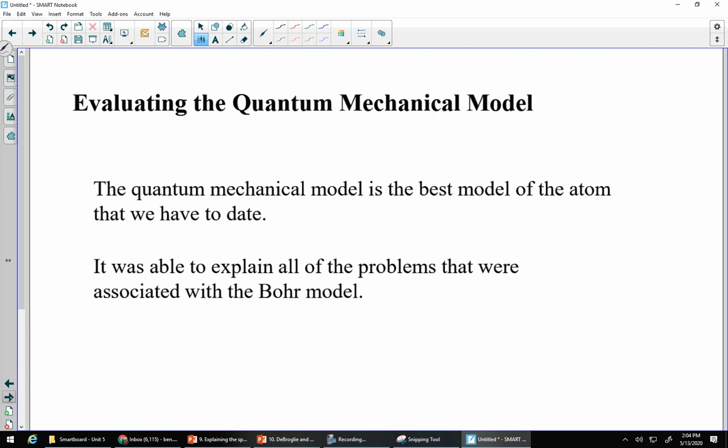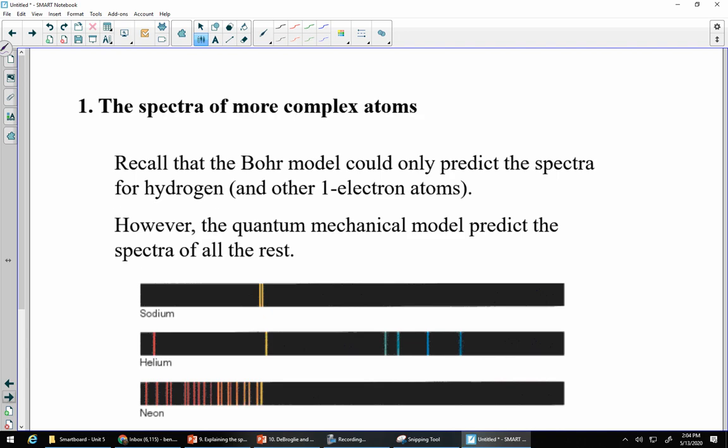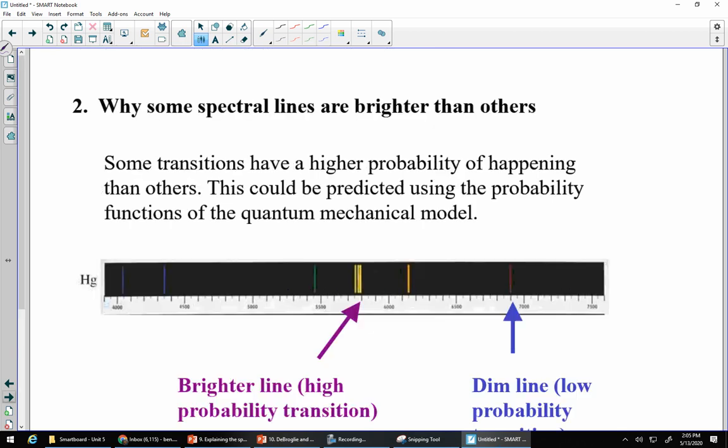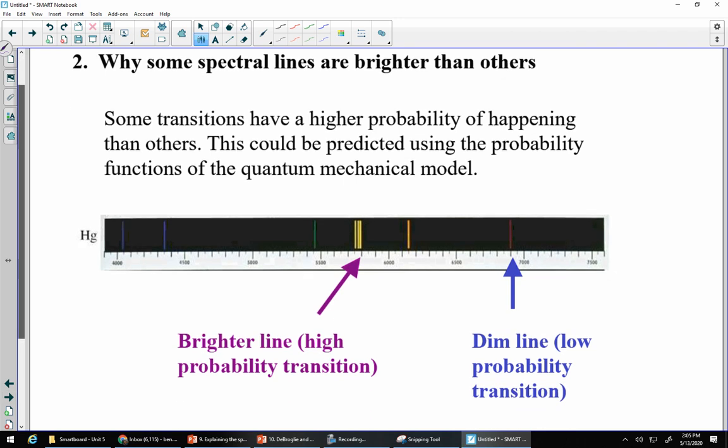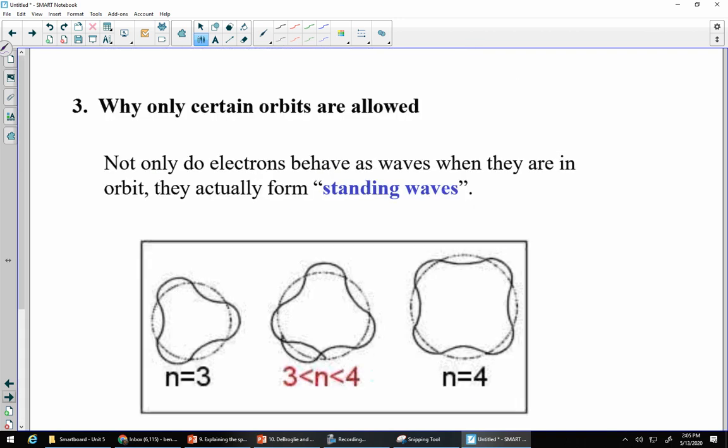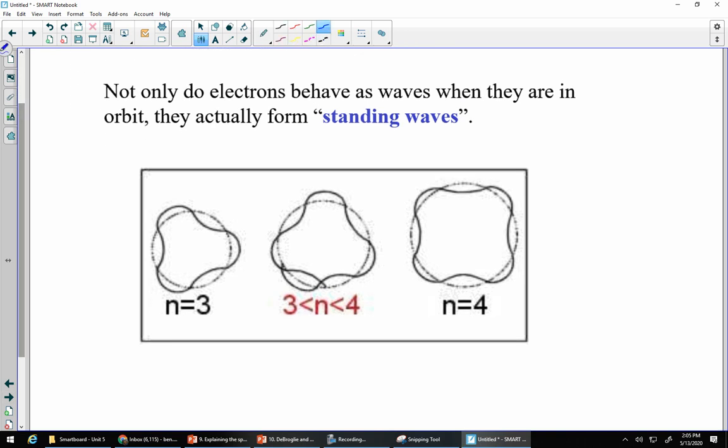The quantum model based on waves and based on probabilities is actually able to explain all the issues with the Bohr model and it is to date our best model of the atom. The spectra of more complex atoms. Realistically, the quantum model predicts all of the spectra and it's based on probabilities. It also explains why some spectral lines are brighter than others. Here is Mercury and we see some super bright lines and then we see this ridiculously dim line. The big idea is it's all about probabilities and people have calculated these probabilities, which is crazy. So the brighter the line, the higher probability you will have for that particular transition. The dimmer the line, the less likely it'll be for that transition.